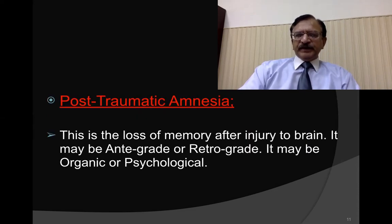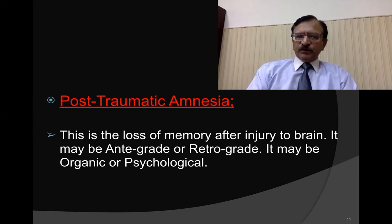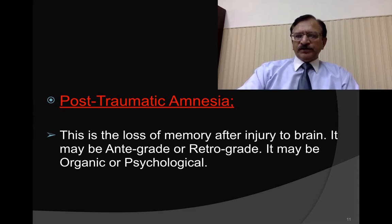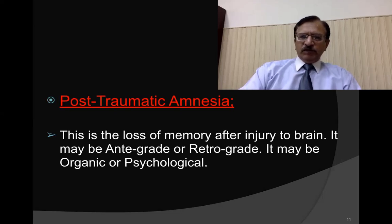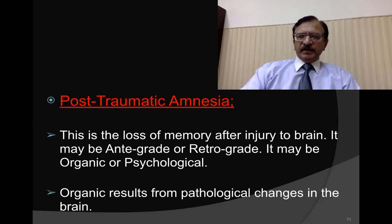Post-traumatic amnesia is loss of memory after injury to the brain. It may be anterograde or retrograde, and it can be organic or psychological. Retrograde amnesia is loss of past memory, while anterograde amnesia means the person does not know the circumstances around them — where they are or what their name is. Either type of amnesia can be seen.